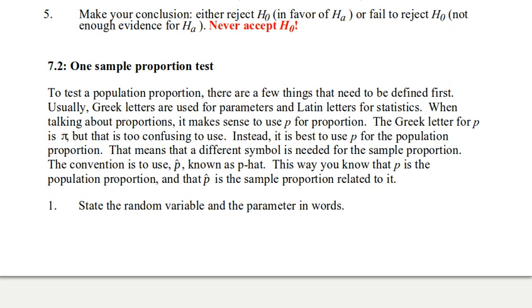That means that we have to find a different symbol for sample proportions. The convention that is used is to put a hat on that P to make it a sample statistic. This way, you know that P is the population proportion and P hat is the sample proportion related to it.